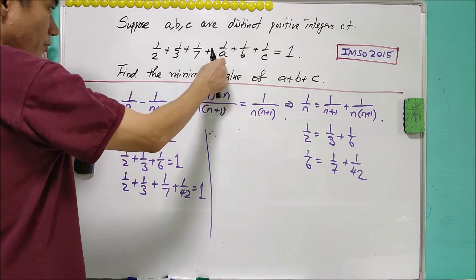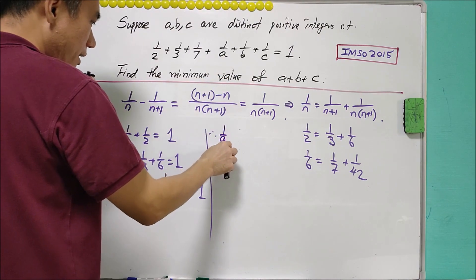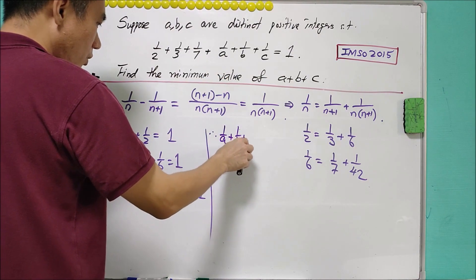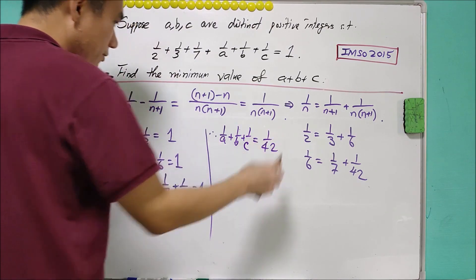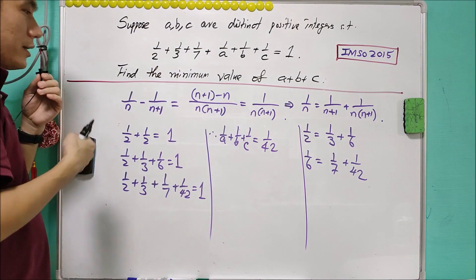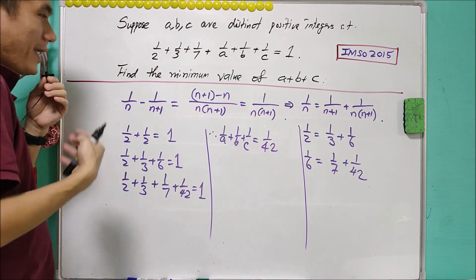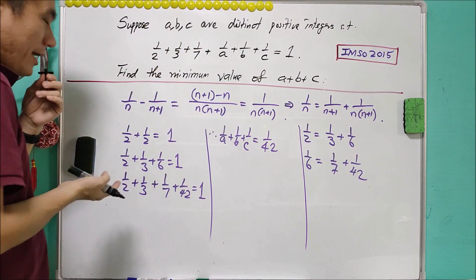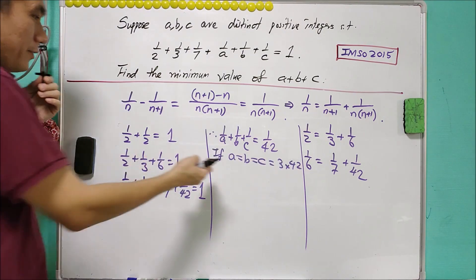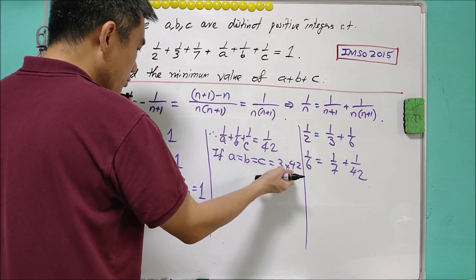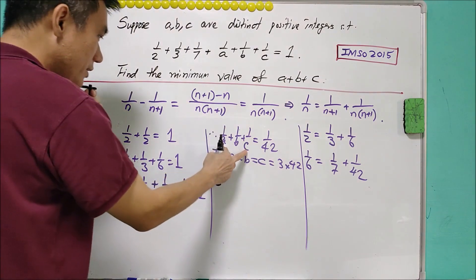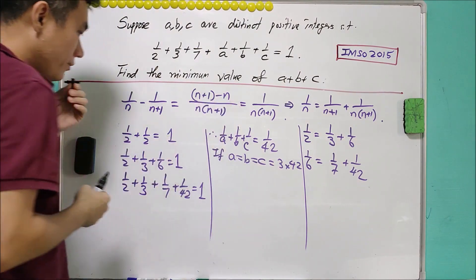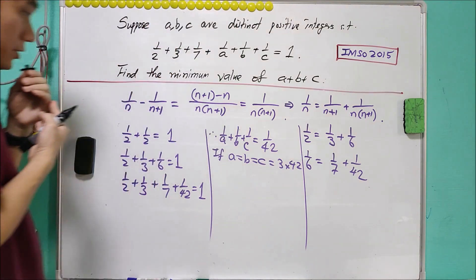And therefore, from what we have here, 1 over A, 1 over B, 1 over C is of the sum 1 over 42. If A, B, C can be the same, then we can easily get the answer. If A equals to B equals to C equals to 3 times 42, it will satisfy the equation because one of it will be 1 third of 1 over 42. So the sum will be equals to 1 over 42.